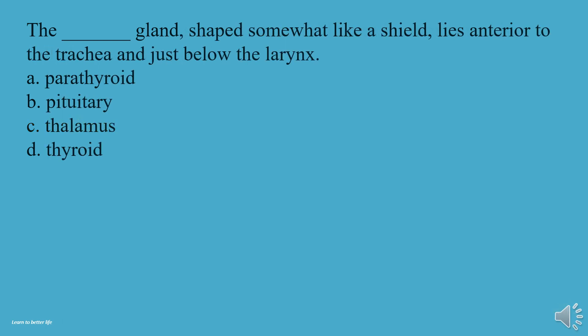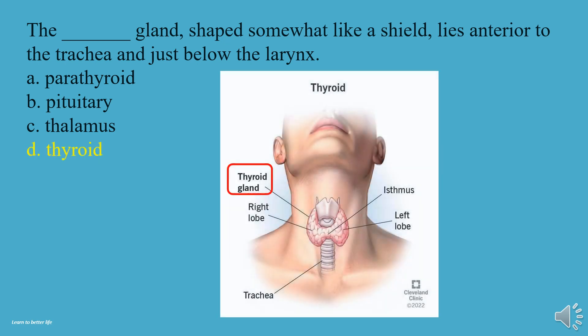What gland, shaped somewhat like a shield, lies anterior to the trachea and just below the larynx? A, Parathyroid. B, Pituitary. C, Thalamus. D, Thyroid. The answer is D, Thyroid.